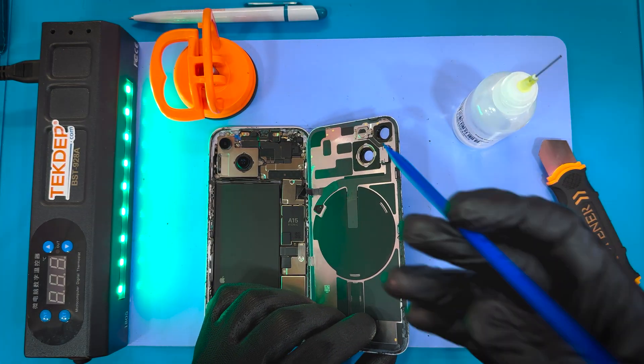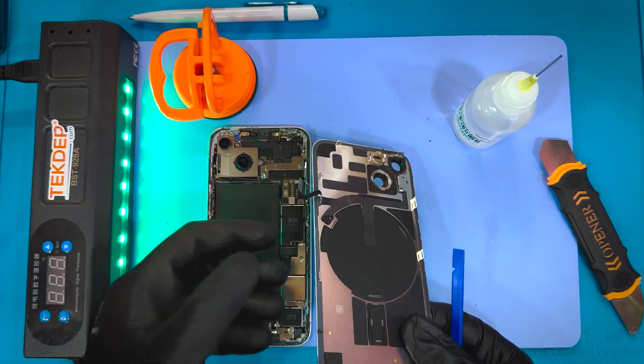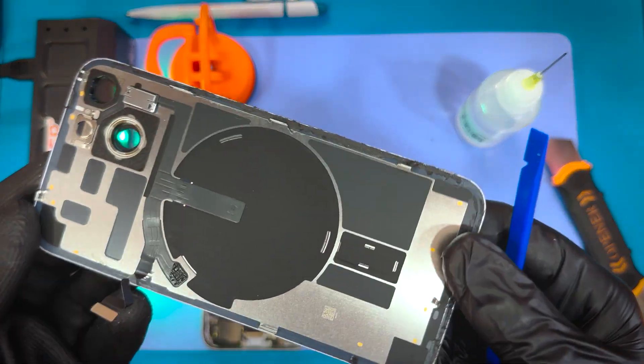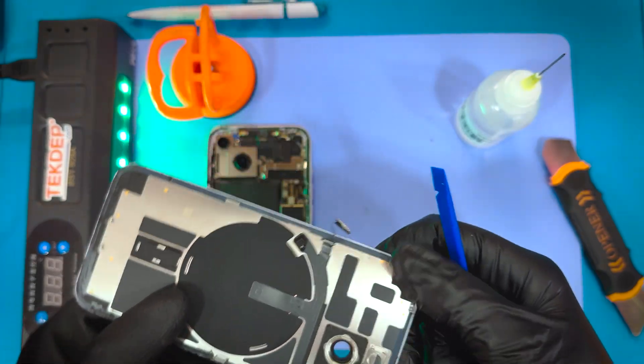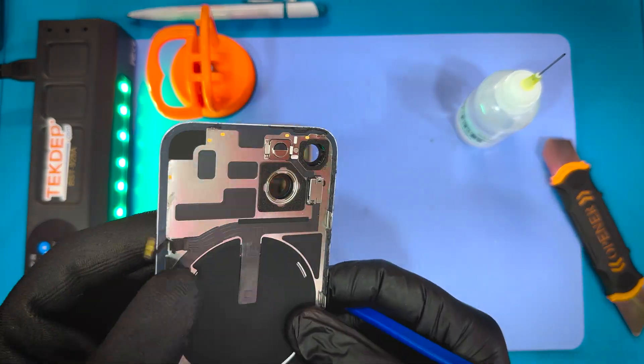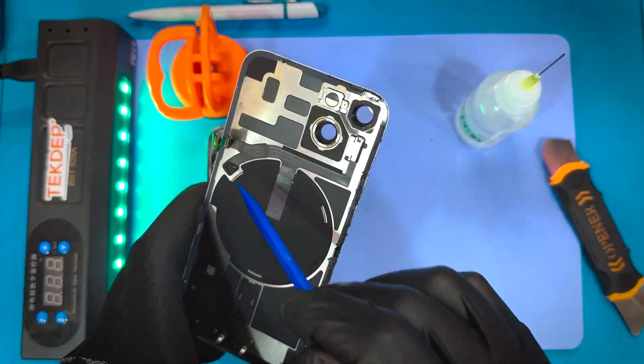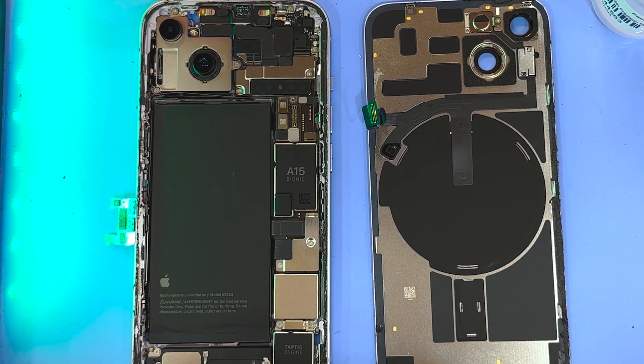Now we're going to disconnect that little flex cable that connects the battery to the NFC wireless charging pad. And there you have it, the back glass is free. Phone comes with an A15 bionic chip. Sam right there was motioning to the flex cable area where you have to be careful while you're spudging.